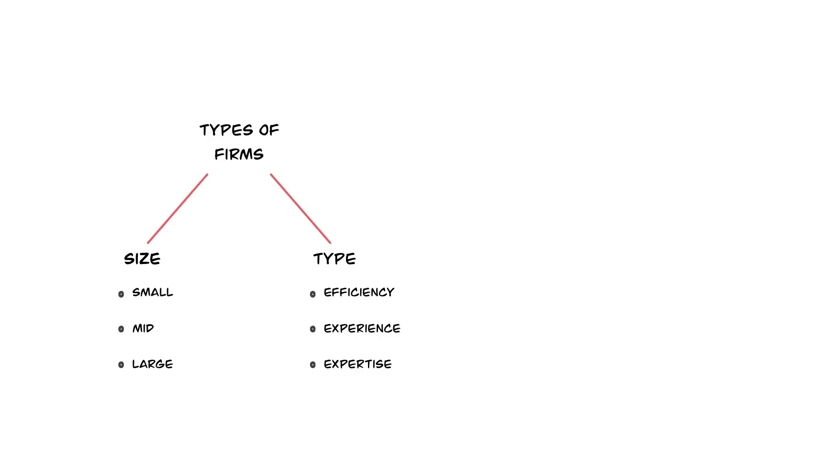The first category is the size, and you have three types of firm sizes: small, medium, and large. This is pretty self-explanatory, so we'll just skim over that. The second category is the type of firm.